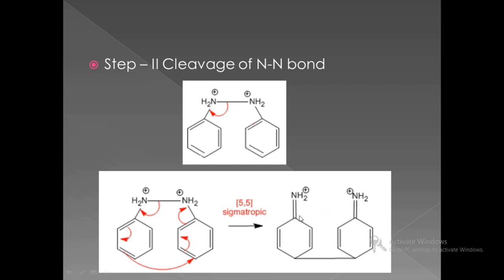In this new structure, both benzene rings have a carbon-nitrogen double bond present. Another important feature is that a new carbon-carbon single bond is formed between the two benzene rings. We call this reaction a 5,5-sigmatropic rearrangement. From our previous knowledge we note that this sigma bond is going to shift its position.